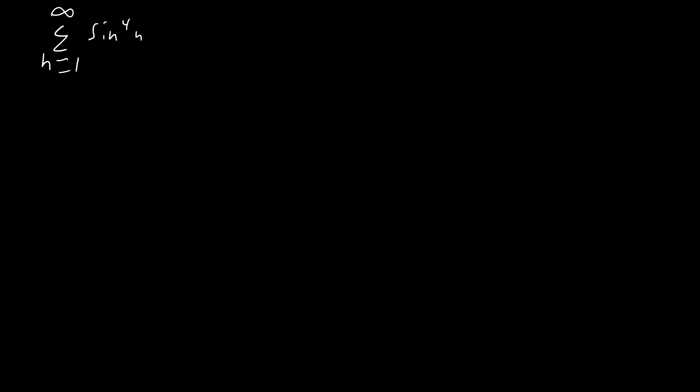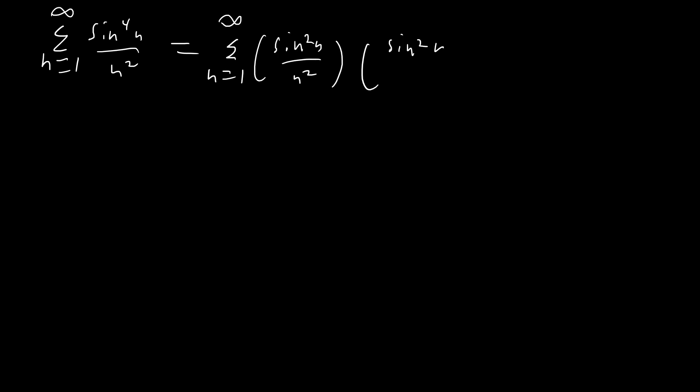Let's jump right into the problem. The method we're going to use is we're going to pretty much repeat the strategy we used for sinc squared of n. So we're going to write sinc to the fourth of n as the sum from n equals 1 to infinity of sine squared of n over n squared times sine squared of n over n squared. We're just going to take each of these sine squared of n over n squared and convert those into integrals, which we did earlier.